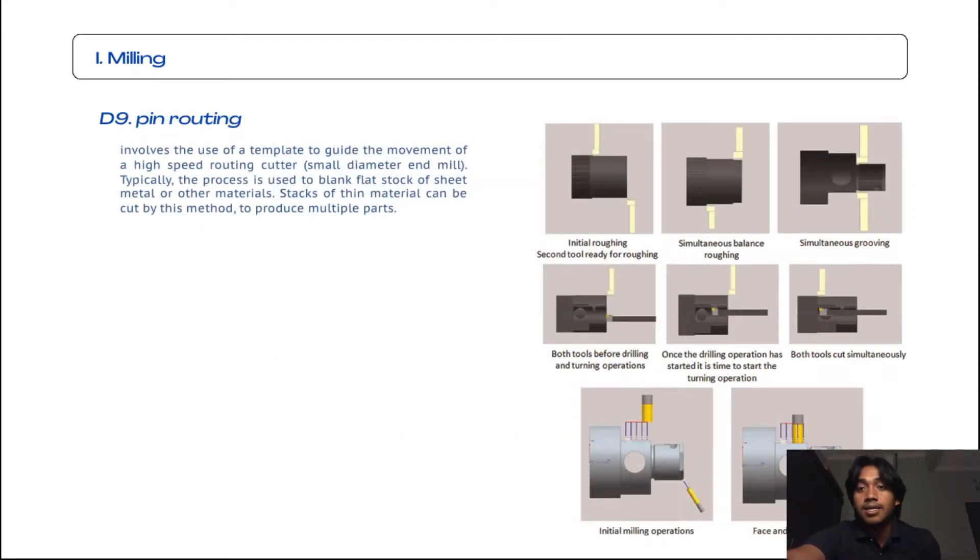Still in milling, the ninth subtopic is pin routing. As we can see in the example photos at the right, initial roughing, second tool ready for roughing, simultaneous roughing and grooving with both tools before drilling and turning operation, then once the drilling operation has started, it's time to start the turning operation. Both tools cut simultaneously in initial milling operation and face thread milling. Pin routing involves the use of a template to guide the movement of a high speed routing cutter, a small diameter end mill. Typically the process is used to blank flat stock of sheet metals or other materials. Stacks of thin material can be cut by this method to produce multiple parts.